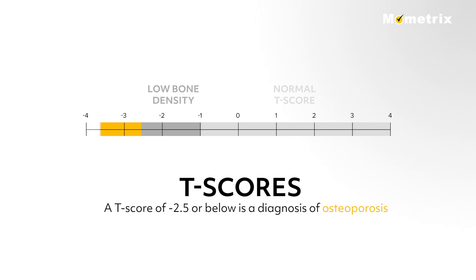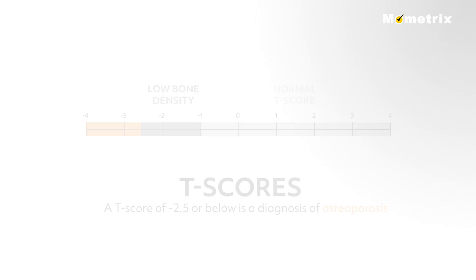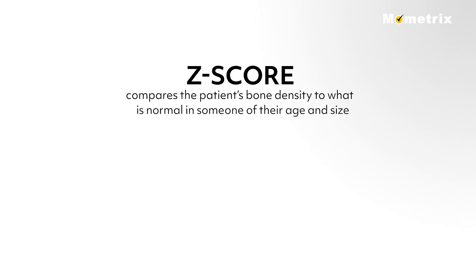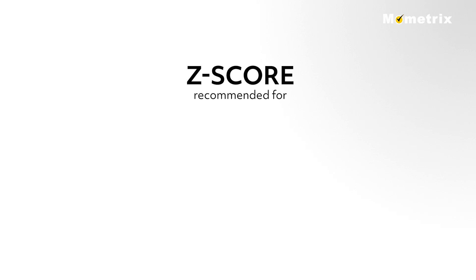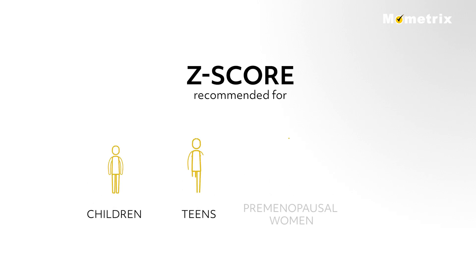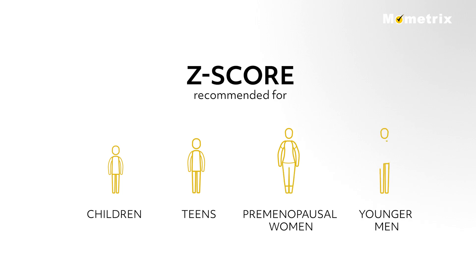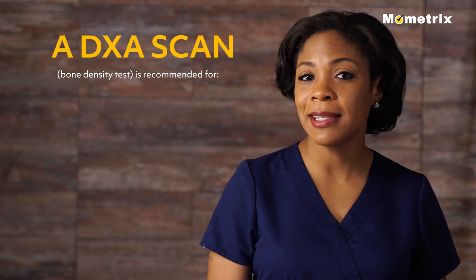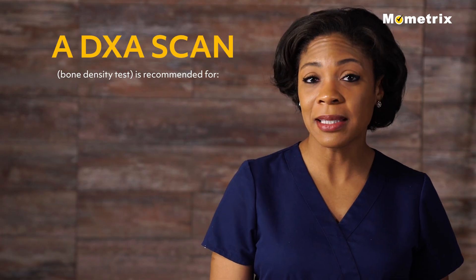A T-score of negative 2.5 or below is a diagnosis of osteoporosis. A bone density test will also show a Z-score, which compares the patient's bone density to what is normal in someone of their age and size. It is recommended to use Z-scores for children, teens, premenopausal women, and younger men.